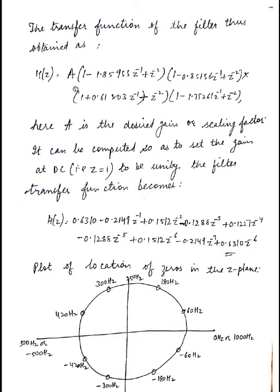So finally we will get the equation of H(z) as 0.6310 - 0.2149 z^-1 + 0.1512 z^-2 - 0.1288 z^-3 + 0.1227 z^-4